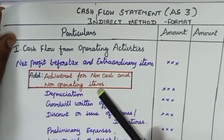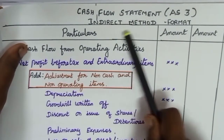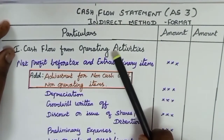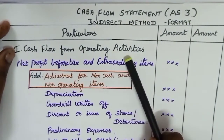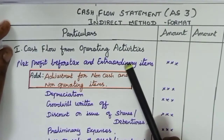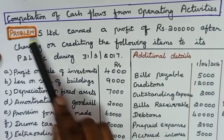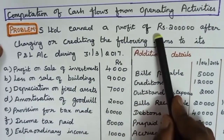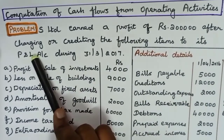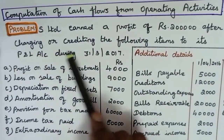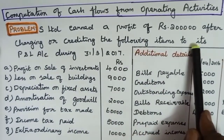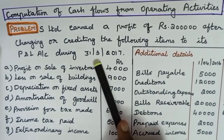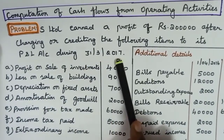This is the format of indirect method of preparing cash flow statement. Using this format, we are going to solve one problem. S Limited earned a profit of rupees 2 lakhs after charging or crediting the following items to its P&L account during the year 31-3-2017.